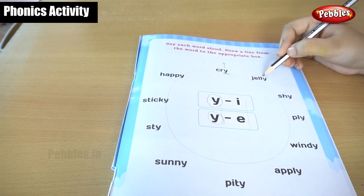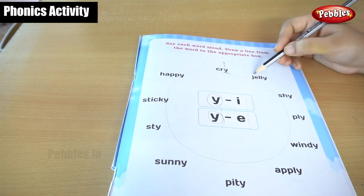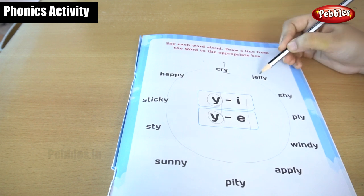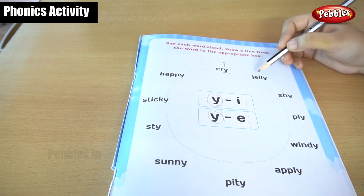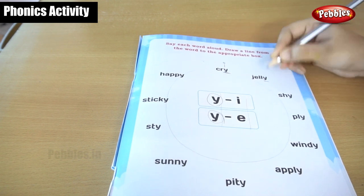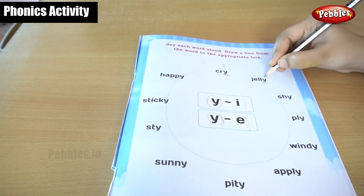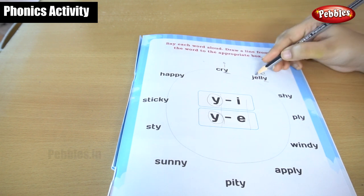Okay, let's see this. This is jelly — J, E, L, L, Y — jelly. The Y gives the E sound. Jelly.